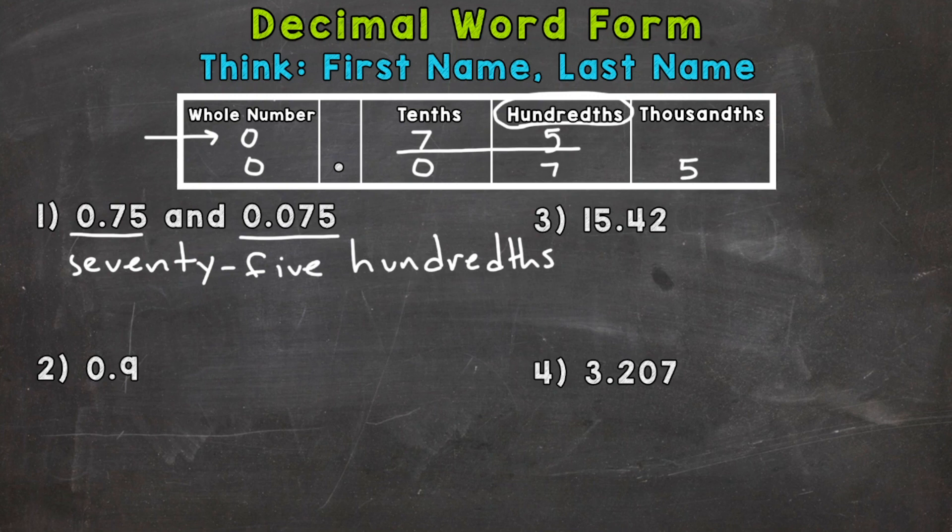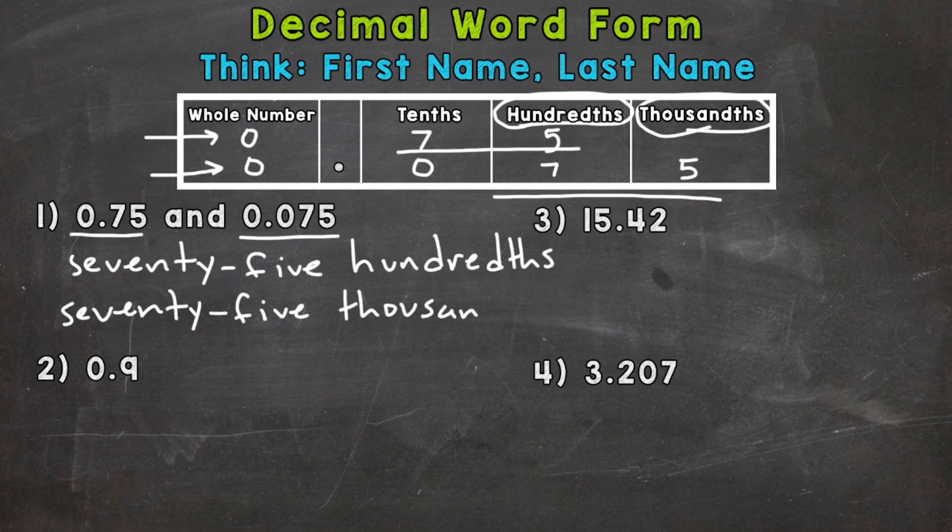The bottom example, it's actually going to have the same exact first name. Read this number as is. We have a 75. So 75. Now, the last name is going to be different, because the bottom one ends in the thousandths place. So that's going to be 75 thousandths.